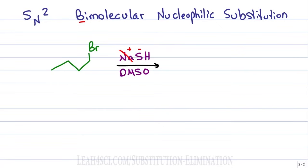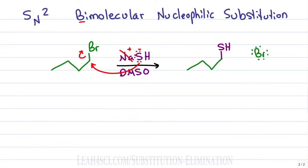This is a fast reaction because we're not waiting for a carbocation to form. Instead, the nucleophile takes its lone electrons to directly attack the carbon holding the leaving group and kick it out, so in one single step we get the entire product. SH is now attached where the bromine leaving group used to be. This product is achiral, but in the case of a chiral starting molecule you would get an inversion of the initial configuration for SN2 reactions.